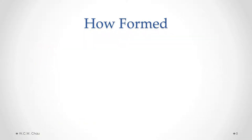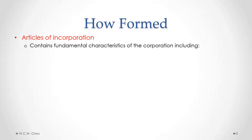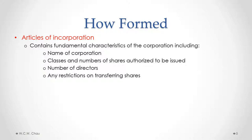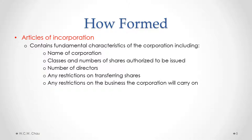One of the documents that needs to be filed to form a corporation is the articles of incorporation. The articles are usually prepared by a corporate lawyer and would contain the fundamental characteristics of the corporation, which would include the name of the corporation, the different classes and numbers of shares authorized to be issued, the number of directors on the board of directors, any restrictions on the transfer of ownership of shares, and any restrictions on the business the corporation is allowed to carry on.